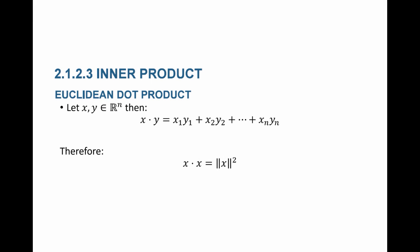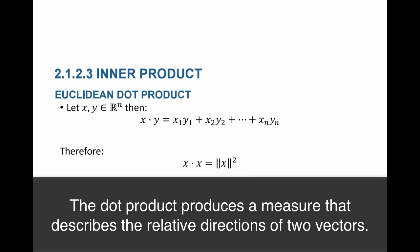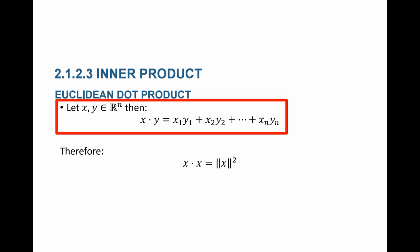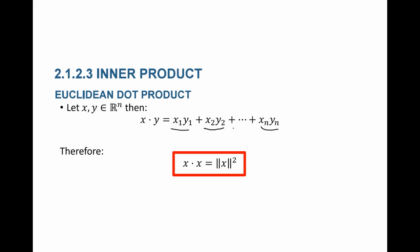The last measure we want in our vector spaces is the Euclidean dot product. The dot product gives a measure of whether vectors are in the same direction or not. It is defined as x·y = x₁y₁ + x₂y₂ + … + xₙyₙ. Notice that x·x, by definition, equals the norm of x squared, since x·x = x₁² + x₂² + … + xₙ².